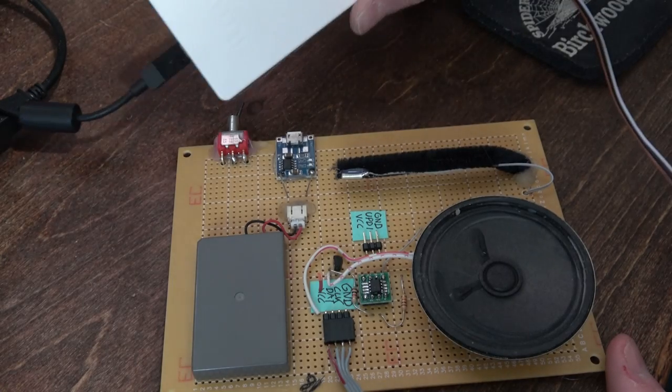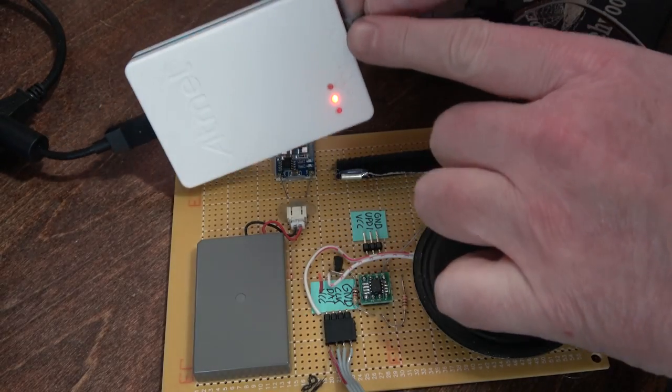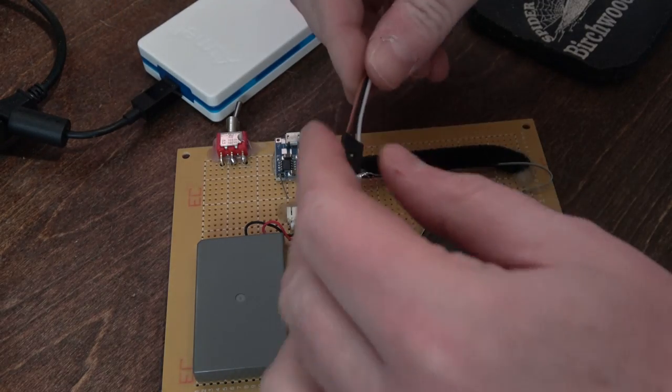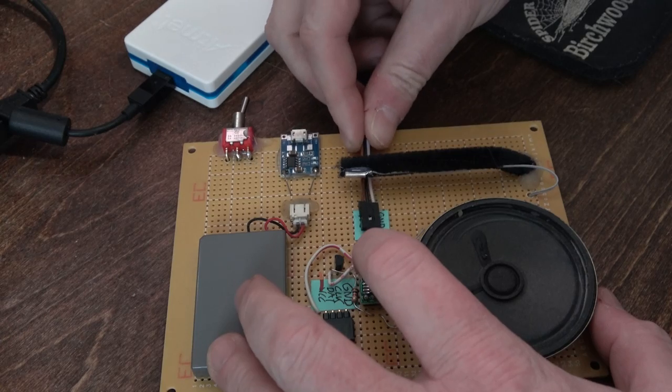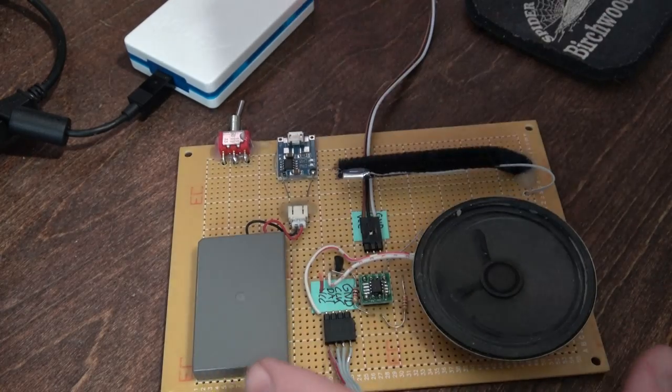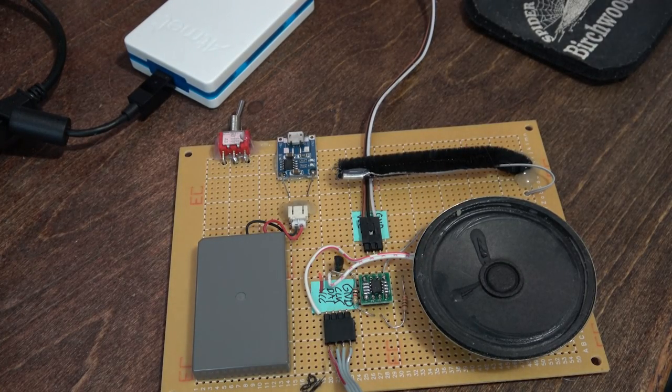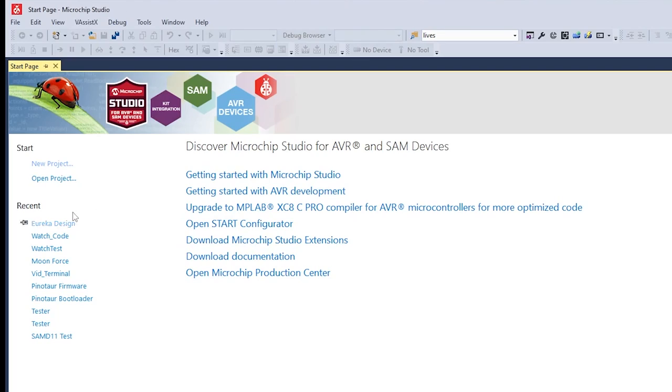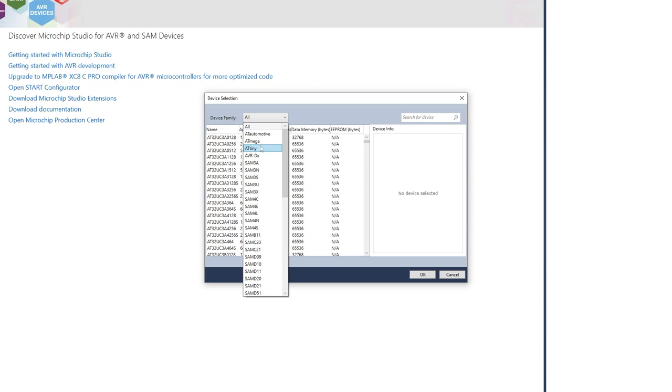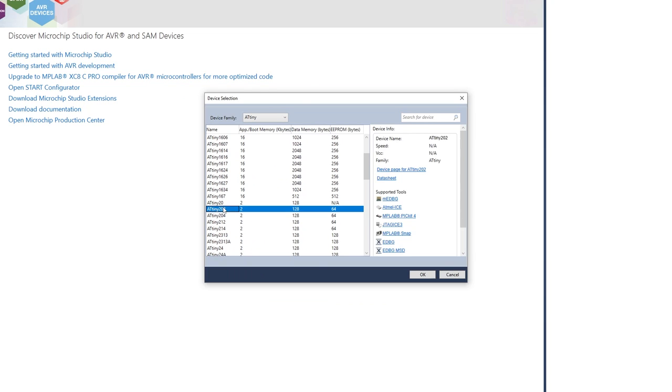I'm going to use an Atmel Ice with the plug in the AVR side as opposed to the SAM side. Then we have our adapter and I'm going to plug it in right here so we can program this board. Let's go to Atmel Studio. Oh I'm sorry, Microchip Studio. Let's go to New Executable Project. Let's call this Cat Book.